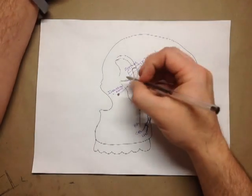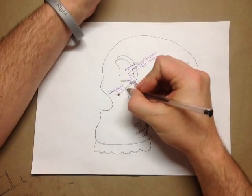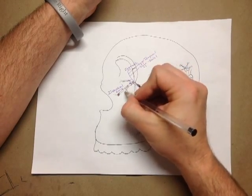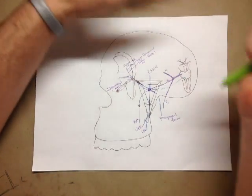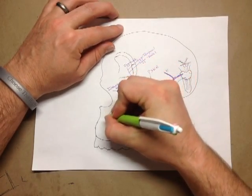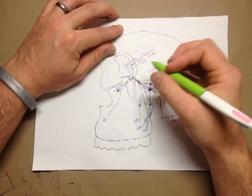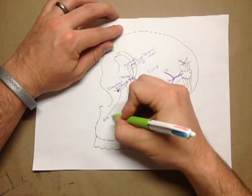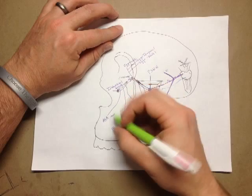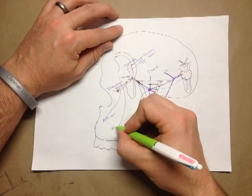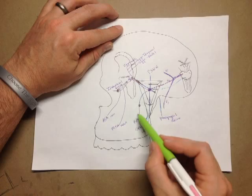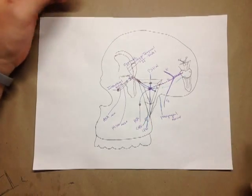While you're inside the infraorbital canal, you're going to have two things that jump off. You're going to have the ASA — the anterior superior alveolar nerve — which gets the anterior teeth. And then you're going to have the MSA, the middle superior alveolar nerve. And then we already have the PSA back here to get the posterior teeth.